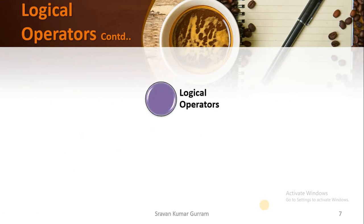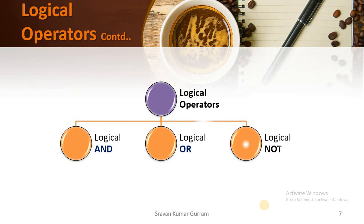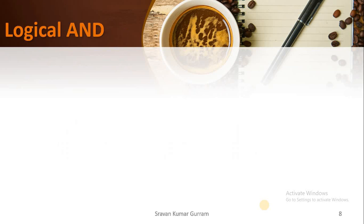We have three types of logical operators: the first is logical AND, the second is logical OR, and the third is logical NOT. Let us discuss these three one by one.